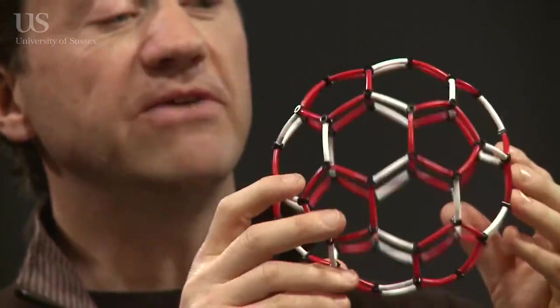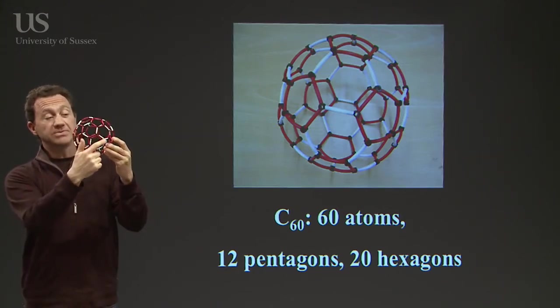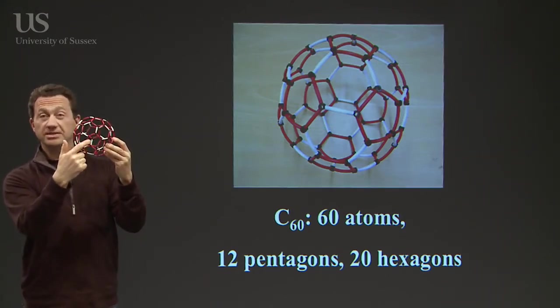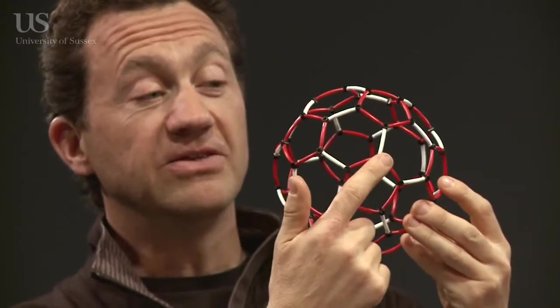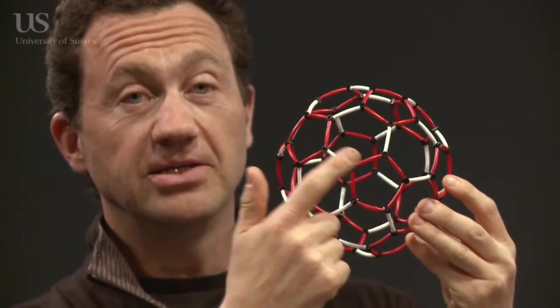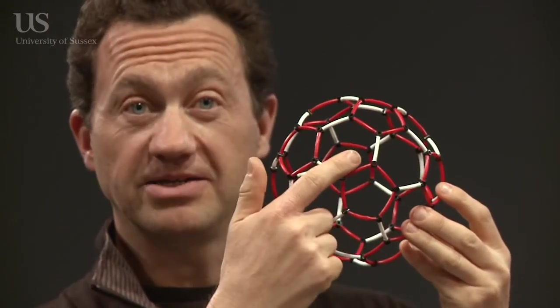Now it's not obvious, but if you study this structure you'll see that every black atom is in a pentagon. There's 60 atoms in the whole structure. There's 5 atoms in each pentagon, so 60 divided by 5 is 12. So there's actually 12 pentagons.